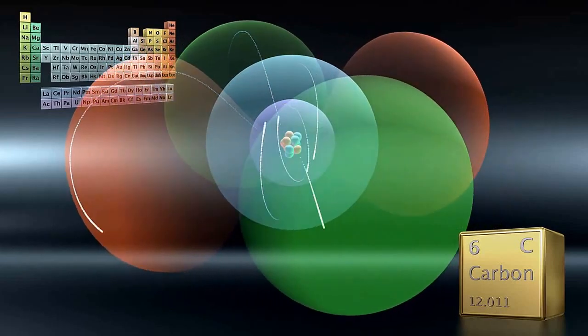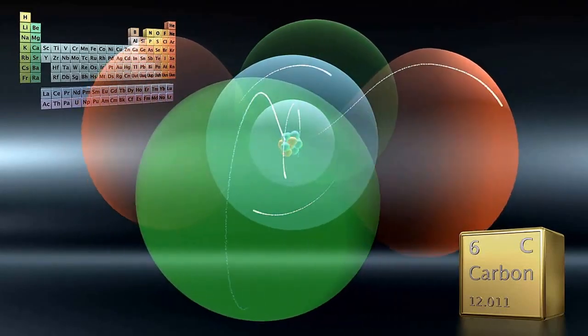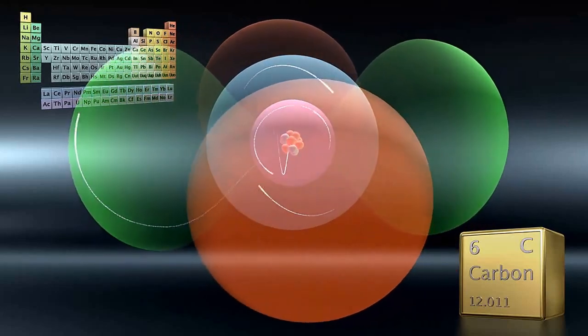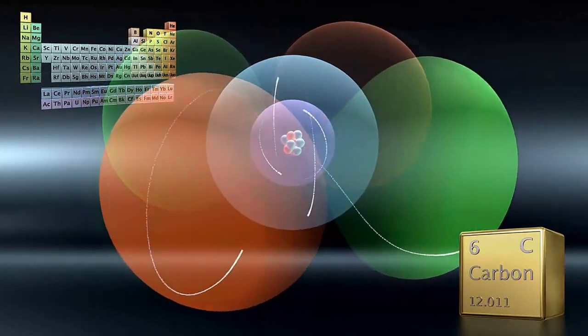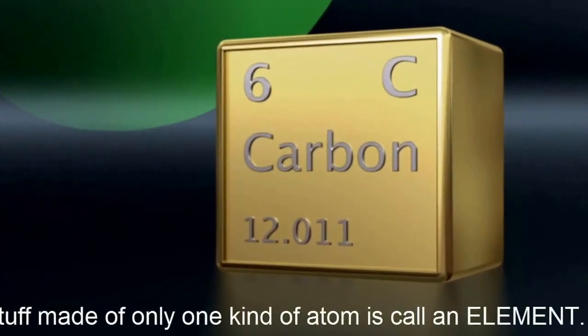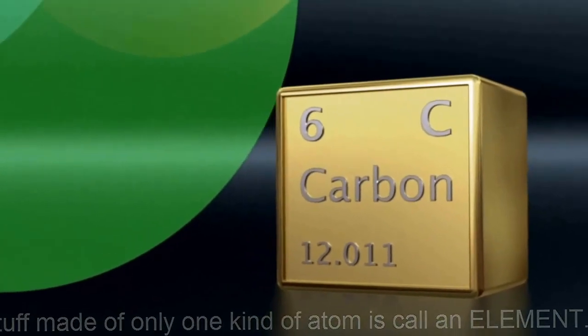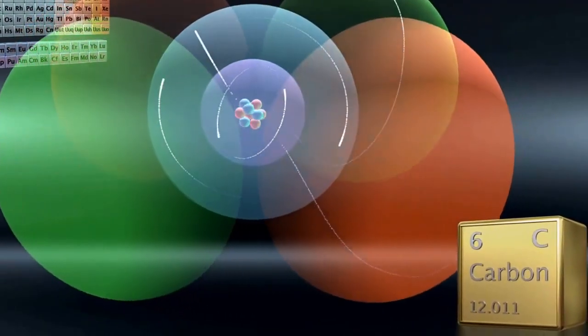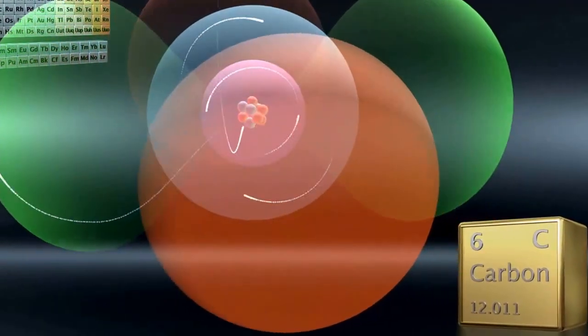Remember we said that it's rare to find one kind of atom all on its own? True, it sometimes happens, and when it does we call that stuff an element, like the carbon in your pencil. But most atoms stick to other types of atoms somehow. They usually like sticking to their own kind too. This video shows how they can do that.